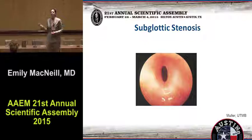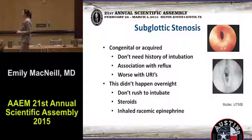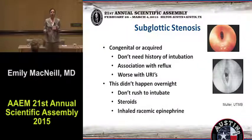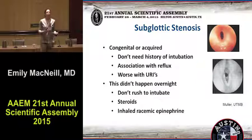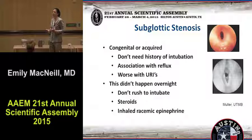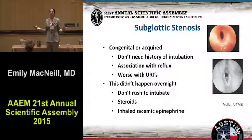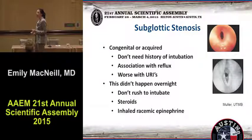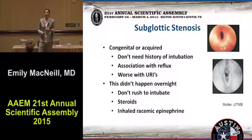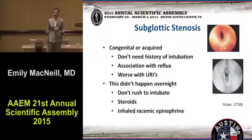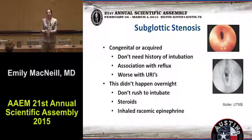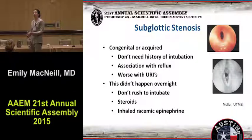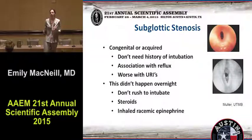So subglottic stenosis — do you want to intubate this airway? No. Subglottic stenosis is not very common, but it can be congenital or acquired. You don't have to have a history of intubation to have subglottic stenosis. We think about it in the child who's been in the NICU for a long time, but you don't have to have that history. It's associated with reflux, and it comes acutely worse with URI. So you can be doing fairly well with a pretty tight airway until you get your first cold. This didn't happen overnight — so don't rush to intervene. Don't paralyze this child. Don't sedate this child. Instead, treat the trigger. Give them steroids, maybe some racemic epinephrine to decrease the inflammation. Calm the child. Treat the pain.